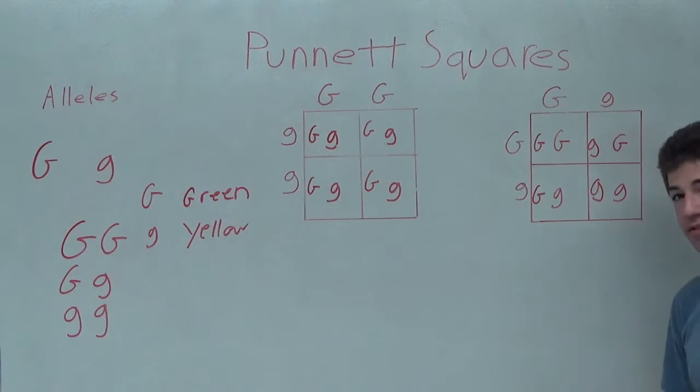So as you can see, we have several combinations this time. We have one square that has two uppercase G, two dominant alleles. We have two squares that has one of each. And we have one final square with two recessive alleles.